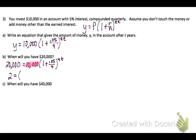and I can go ahead and figure out what 1 plus .05 divided by 4 is and that would be 1.0125. Now I have an exponential form. I'm going to change this to log form in order to solve it. So I have log base 1.0125 of 2 equals 4T.